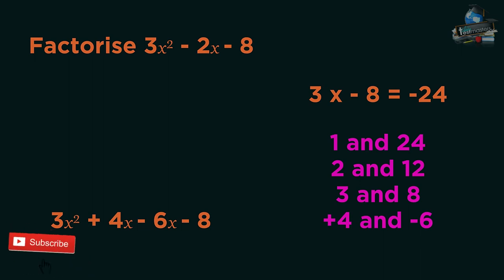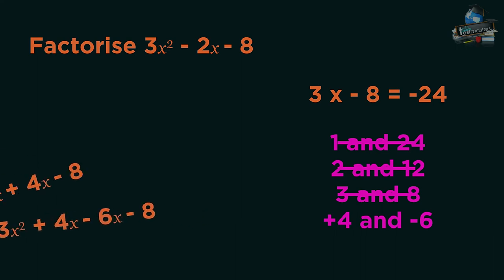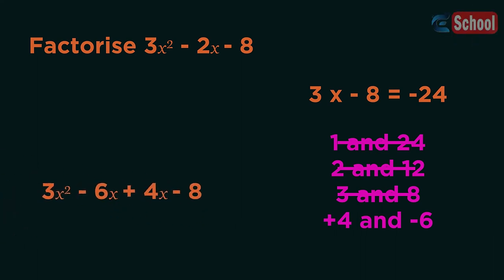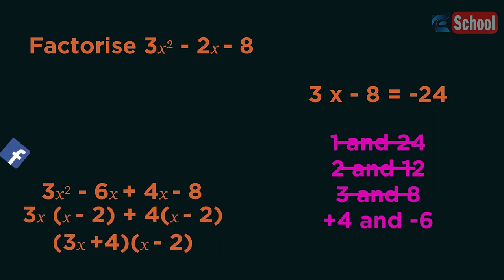Let's rewind to when we rewrote the quadratic as plus 4x minus 6x. If we'd written it as minus 6x plus 4x, so the other way around, it would also have worked. We still end up with the correct final answer.